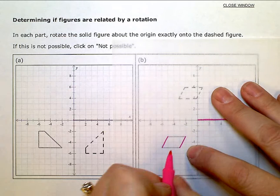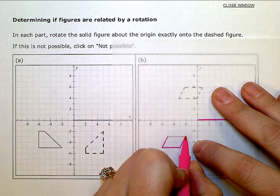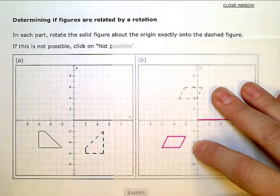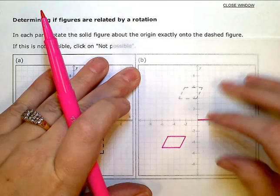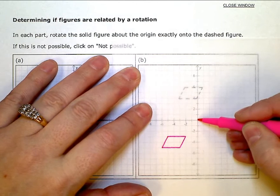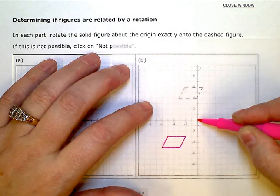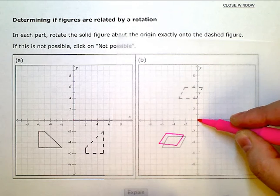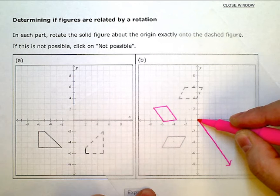I want to know if I can rotate this solid one to exactly coincide with the dashed one. Again, I'm going to anchor my origin - my center of rotation - since I'm doing this the old-fashioned way with tracing paper. I'm going to rotate...